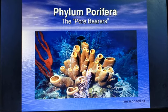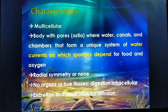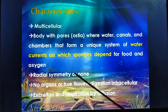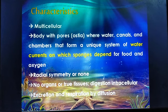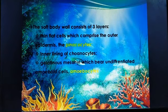They are primitive, multicellular, and sessile in nature. They exhibit radial symmetry, which we have already learned. They have no organs and no true tissues, as they come under Parazoa. Excretion and respiration occur by the diffusion process.